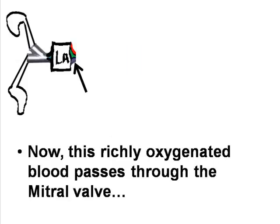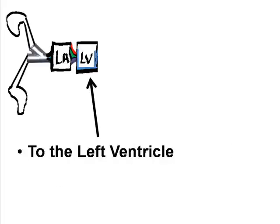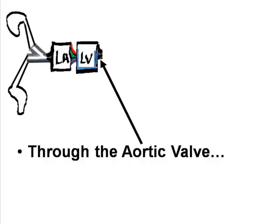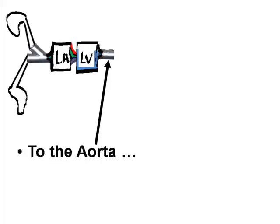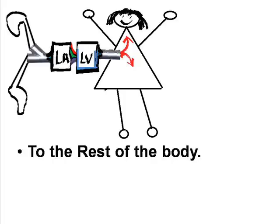Now this richly oxygenated blood passes through the mitral valve to the left ventricle, through the aortic valve to the aorta to the rest of the body.